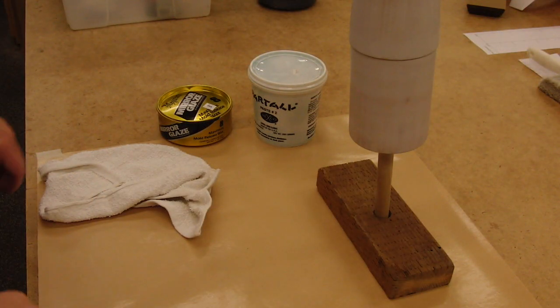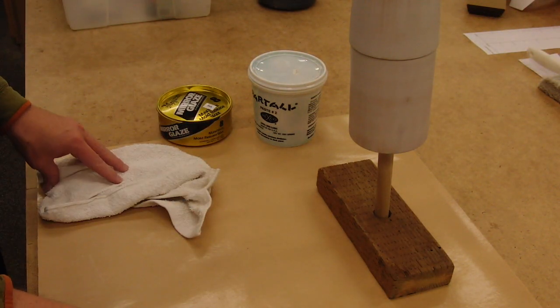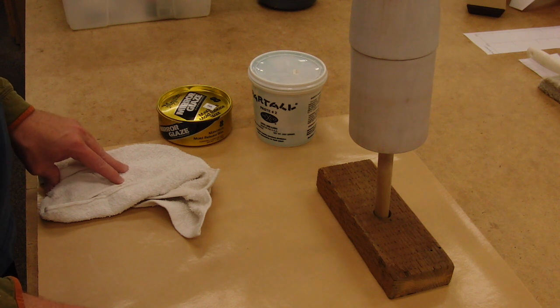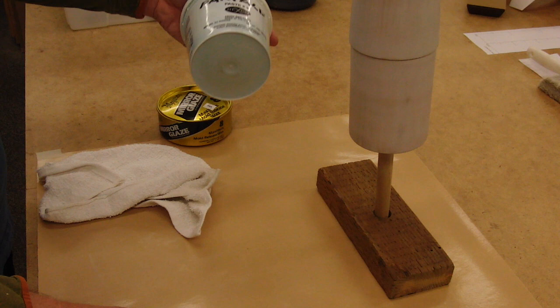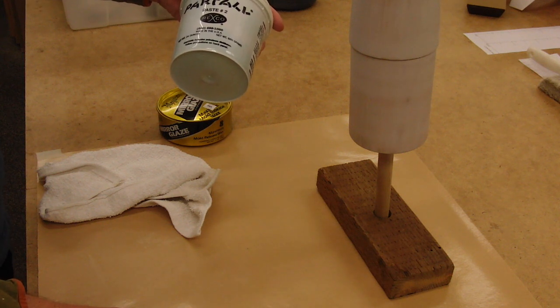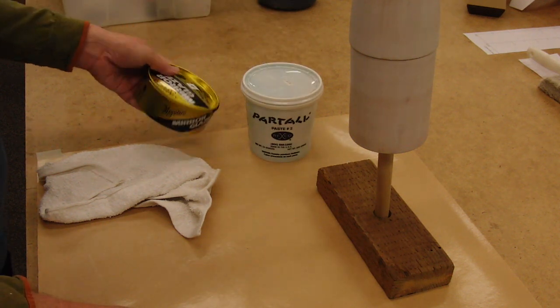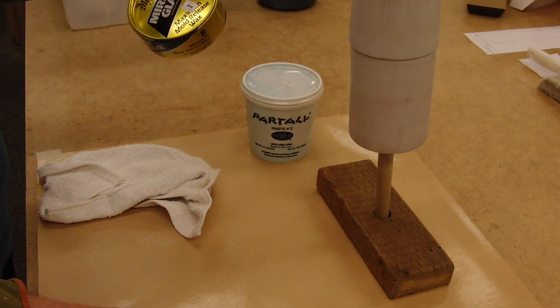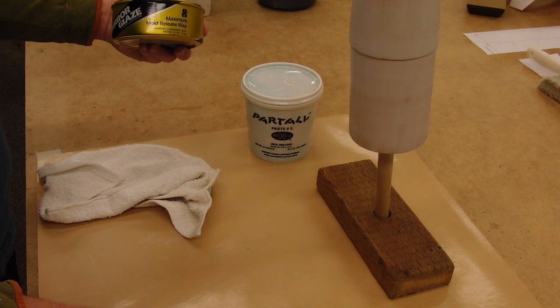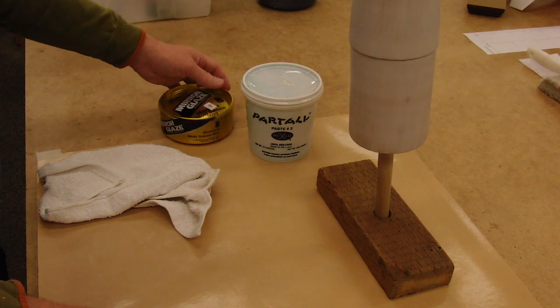So, the next step after sanding and having a dry plug is to put on wax. You can use mold-release wax from Partall. I bought this a long time ago. It's still going strong. And there's another brand here that I've also used, which is made by Megan Nars. And it's called Mirror Glaze Mold Release Wax. It doesn't really matter.